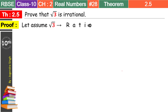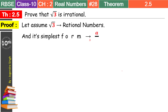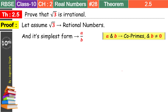चलिए तो हम इसे suppose करते हैं as rational number. So let us assume root 3 as a rational number। और जब यह rational number है, तो इसको p upon q की form में लिख सकते हैं — तो उसकी simplest form है a upon b. So we can say that a and b are co-primes, where b is not equal to 0. Co-prime means इनमें आपस में कोई factor common नहीं है।